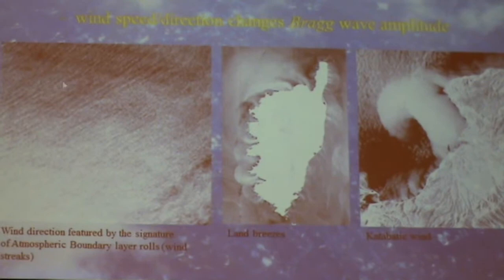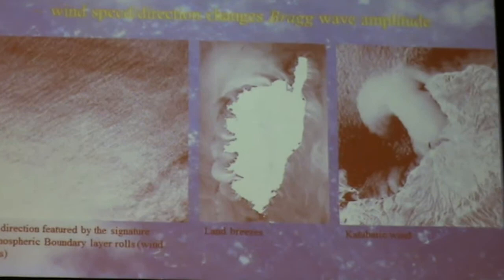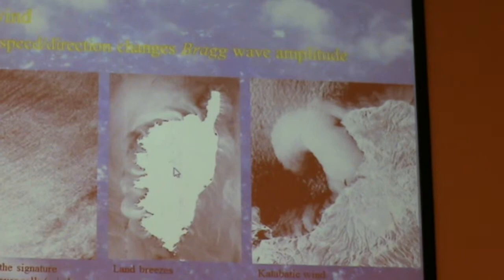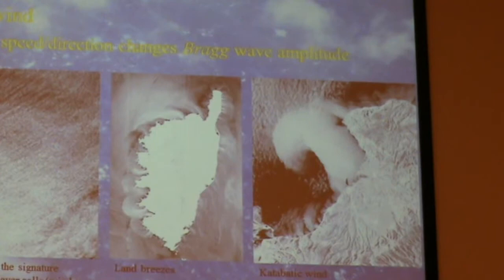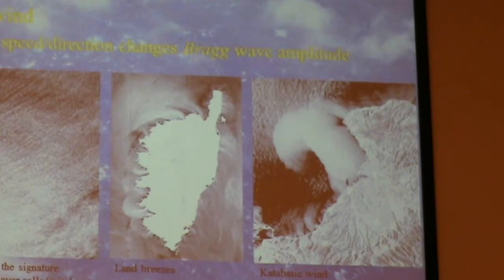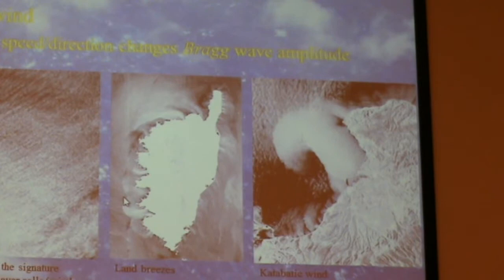You can also observe wind patterns very close to the coast — there is no more limitation next to the coast. For example, you can see the land breeze — the thermal wind at night when the land is colder than the ocean. Then you have a land breeze with the wind blowing from the land to the ocean, with some acceleration depending on the local topography of the coast. You see higher wind in some small areas and lower wind near the coast, with very detailed high-resolution variability that you could not see with the scatterometer.